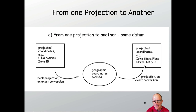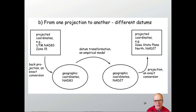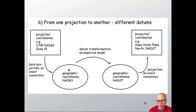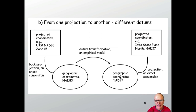If I go from one state plane system to geographic coordinates and then back to state plane in another projection, the data will line up perfectly. Sometimes you're combining data in different datums, so you have to go from a projected coordinate system — say UTM Zone 15 — back-project to NAD83, then apply a datum transformation to NAD27, and then do a projection. By inserting a datum transformation inside the projection pipeline, I can get my data into the right system.